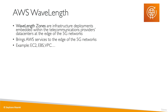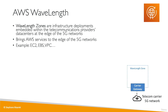For example, you can deploy EC2 instances, EBS volumes, and even VPC to a Wavelength Zone. Say a telecom carrier has a 5G network — you're going to have a Wavelength Zone, and through a carrier gateway, you're able to deploy an EC2 instance on that zone.